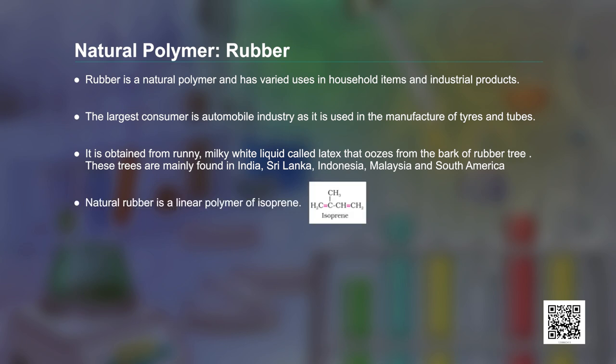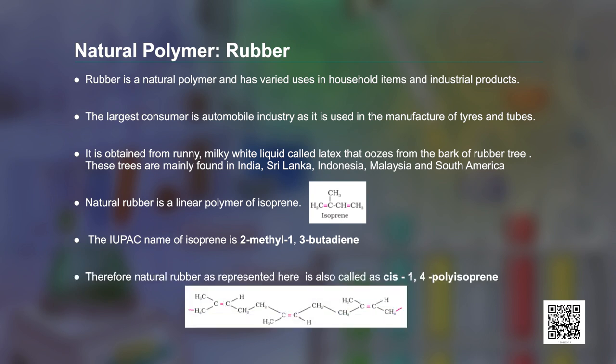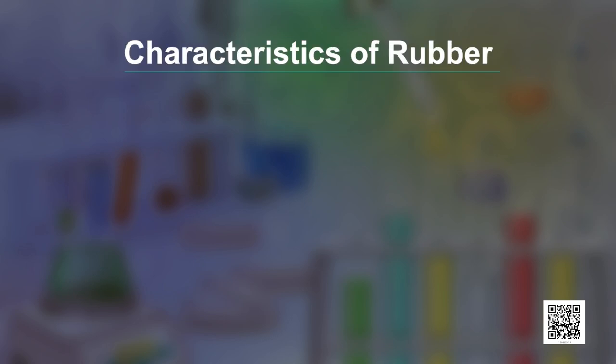Natural rubber is a linear polymer of isoprene. The IUPAC name of isoprene is 2-methyl-1,3-butadiene. Natural rubber is represented as shown in this picture and is also called cis-1,4-polyisoprene.